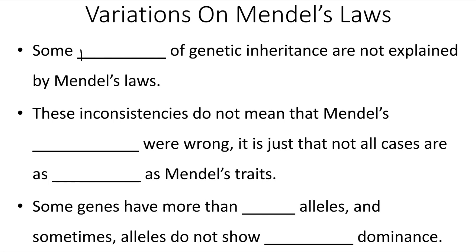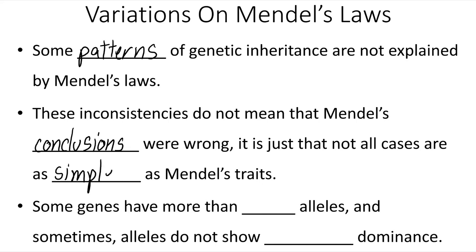Some patterns of genetic inheritance are not explained by Gregor Mendel's laws. These inconsistencies do not mean that Mendel's conclusions were wrong — it's just that not all cases are as simple as Mendel's traits. It turns out that some genes have more than two alleles. In Gregor Mendel's pea plants, each gene he looked at only had two different options, but for humans — for example, hair color — there are multiple different alleles and a variety of different genes that have more than two options.